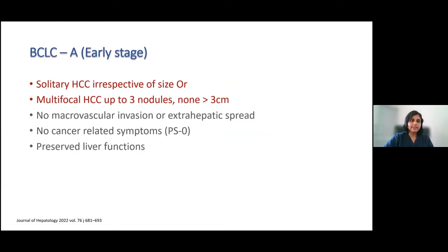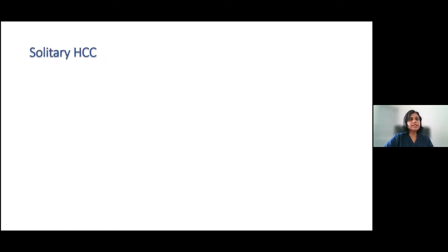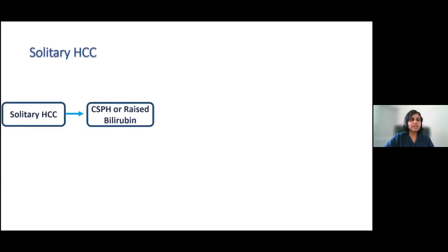BCLC A is the early stage. What has changed from BCLC 0 is that it includes solitary hepatocellular carcinoma irrespective of size — earlier it was only lesions less than two centimeters — and multifocal hepatocellular carcinoma up to three nodules, none more than three centimeters. This corresponds to the Milan criteria. Again, no microvascular invasion, no extra-hepatic spread, no cancer-related symptoms, and preserved liver function.